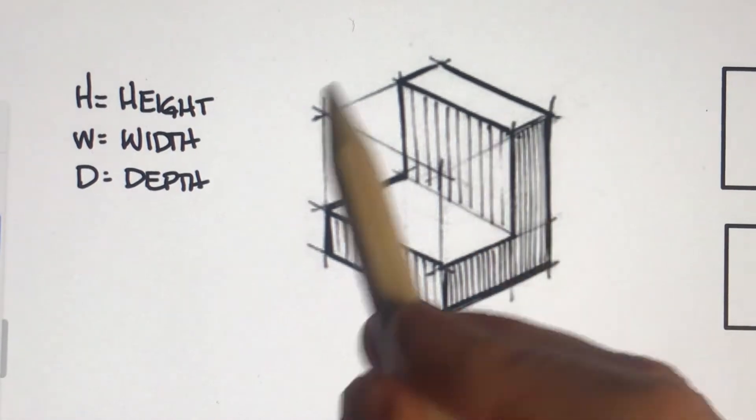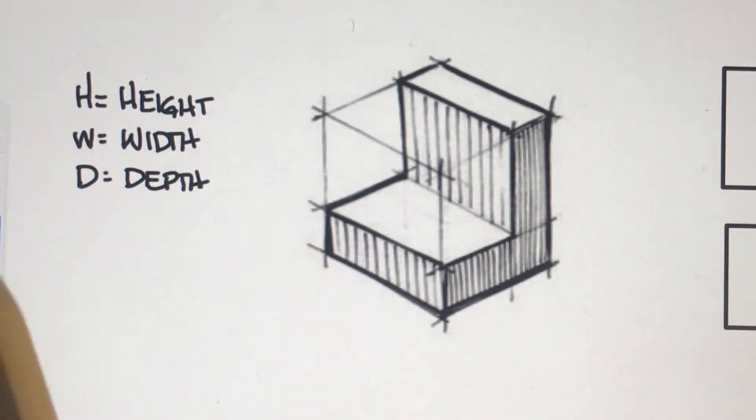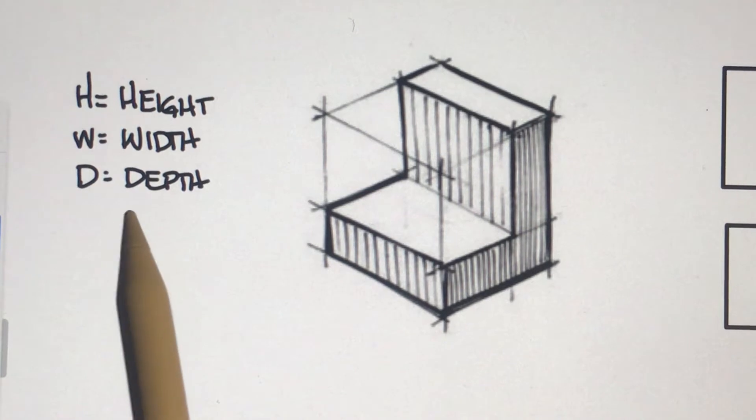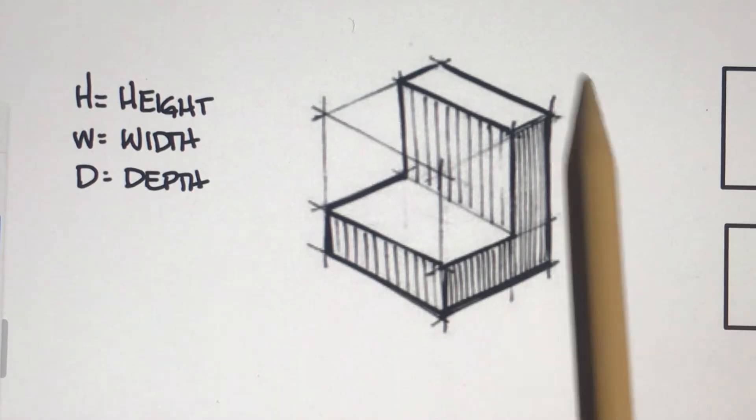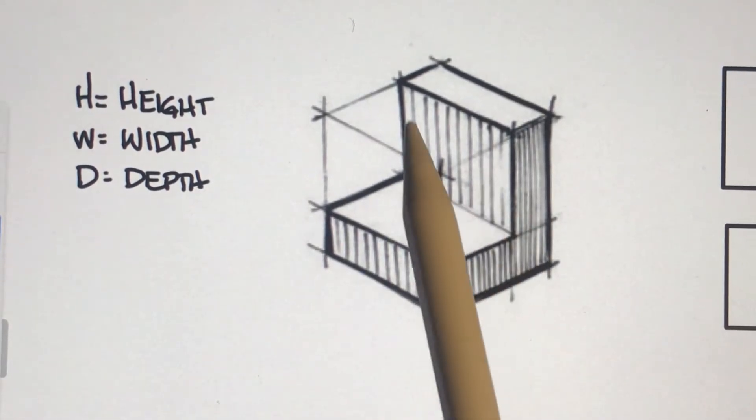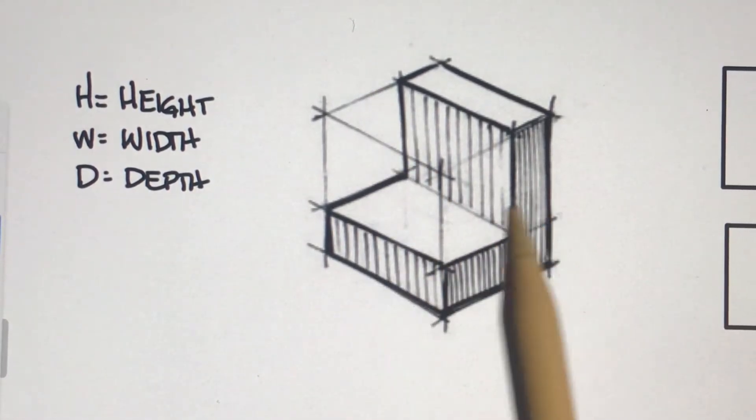So when we're given a part, we have to be able to find the height, the width, and the depth of the part so we can do our centering formula. Then that will lay out our views for us and give us the top, the front, and the right side in the projection box.